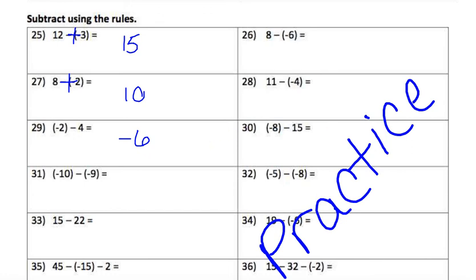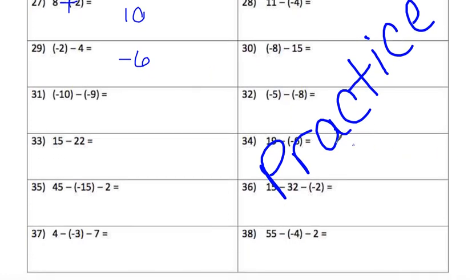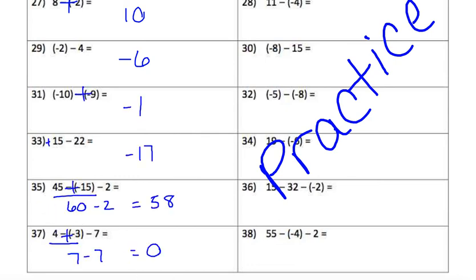You do the rest: 31, 33, 35, and 37. There are your answers. Remember for problems like 35 and 37, when there are three numbers, do the first two first and then add in the last one.